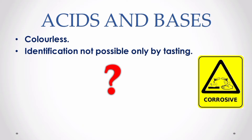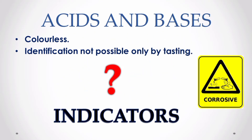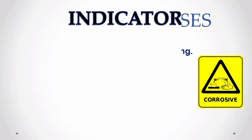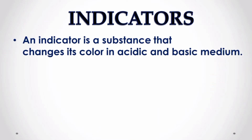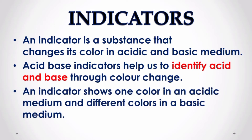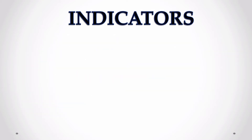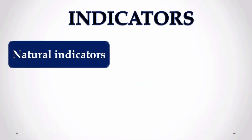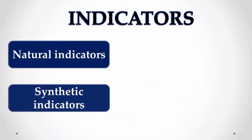So how do we identify acids and bases if we cannot use our sense of vision or taste? That is where the role of indicators comes in. Indicators are substances that show one particular color in an acidic medium and another color in a basic medium. Hence an indicator is a substance or compound that can identify acid and base through color change.